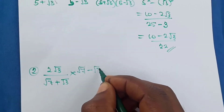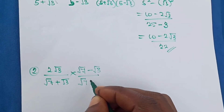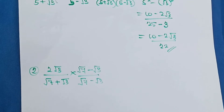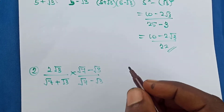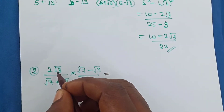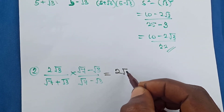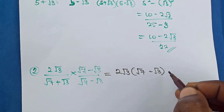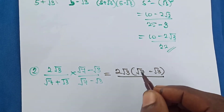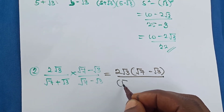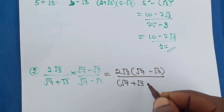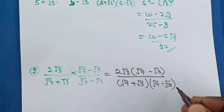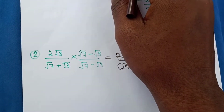So we multiply by (√7 minus √3) over (√7 minus √3). We go ahead and multiply: 2√3 multiplies the numerator, giving (2√3)(√7 minus √3), all over (√7 + √3)(√7 minus √3).